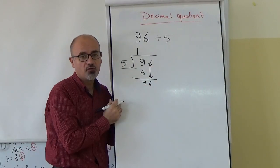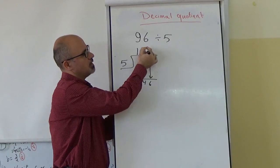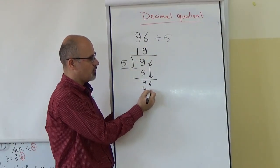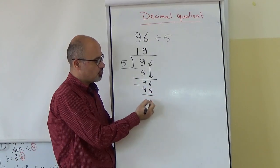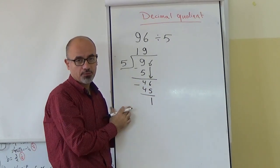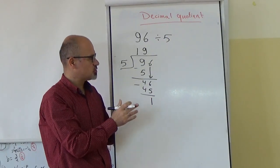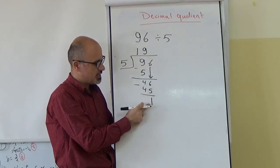46 divided by 5, it is simply 9. 9 times 5, it is 45. Let's subtract them. We will obtain only 1. And in this way, we say to the teacher, teacher, we are finished. The quotient is 19 and the remainder is 1.